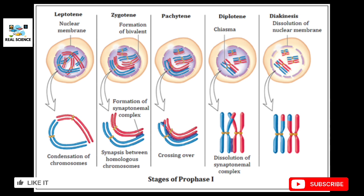In the zygotene phase, formation of bivalent chromosomes starts and synapsis between homologous chromosomes begins. In the pachytene phase, crossing over starts between the sister chromatids of homologous chromosomes. Then in the diplotene phase, chiasmata form and crossing over starts and reaches its maximum.